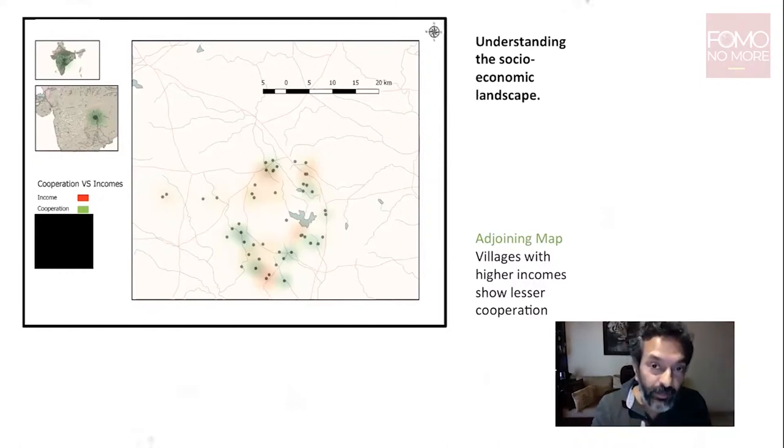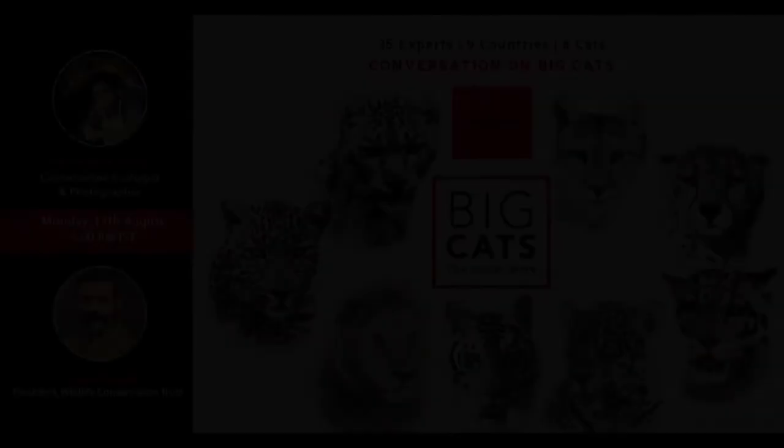You need to constantly interact with them so that their behavior slowly changes. They understand that the forest is their mother. If the forest goes, the agriculture will fail. There will be a huge amount of human-wildlife interactions which are going to be detrimental to their own well-being.